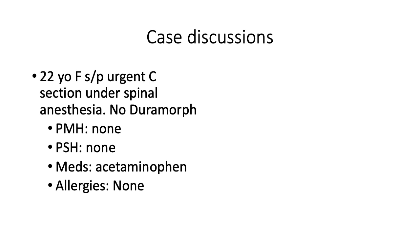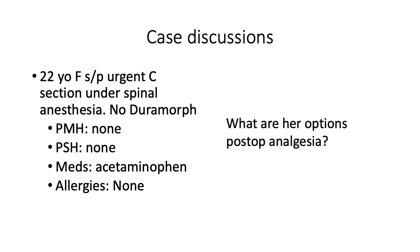Our first case discussion: a 22-year-old female status post urgent C-section under spinal anesthesia. Because this was an emergency, there was no time to add duramorph to the local anesthetic. She's otherwise healthy with no prior surgeries and no allergies. What are some of her options for post-op analgesia?